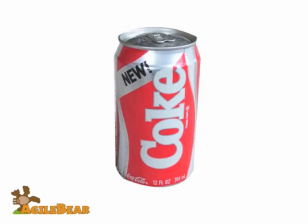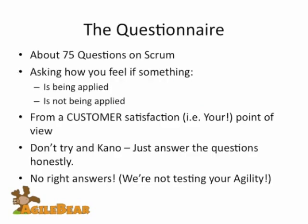Coca-Cola got feedback from their customer base and rolled back from New Coke to the aforementioned Coca-Cola Classic. That's why Kano Analysis has to be done from the customer base and not the marketing base or the stakeholder base. I'm sure the Coca-Cola marketing department thought it was awesome, but when it went to the real market — the customers — they gave feedback. And that's why you're here, why I've sent you this video, why I'm asking you to do this questionnaire: because I would like to take this technique, Kano Analysis, and apply it to Scrum itself. To do that, I've got to talk to the customers, the users of the product — and that's you.